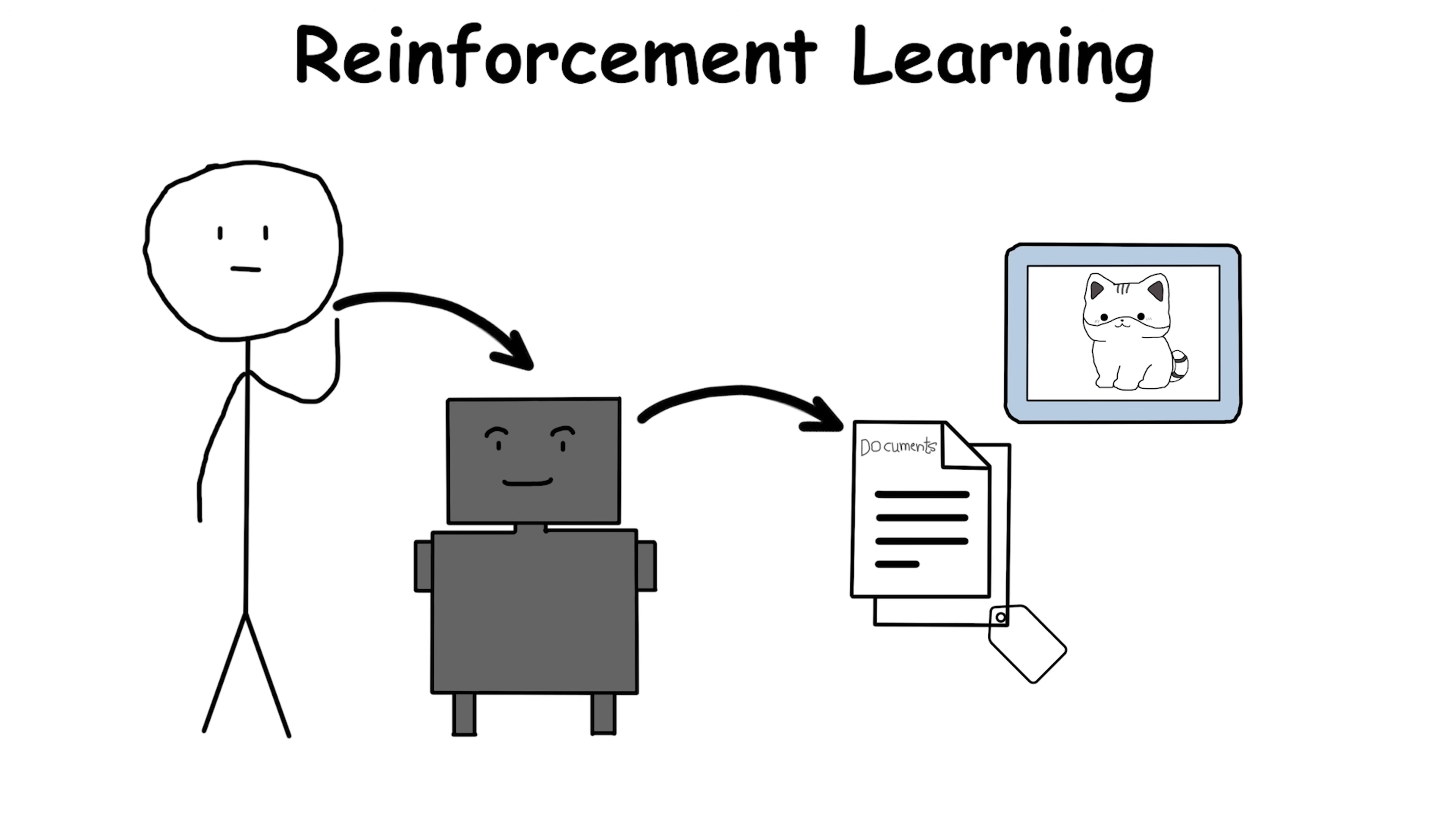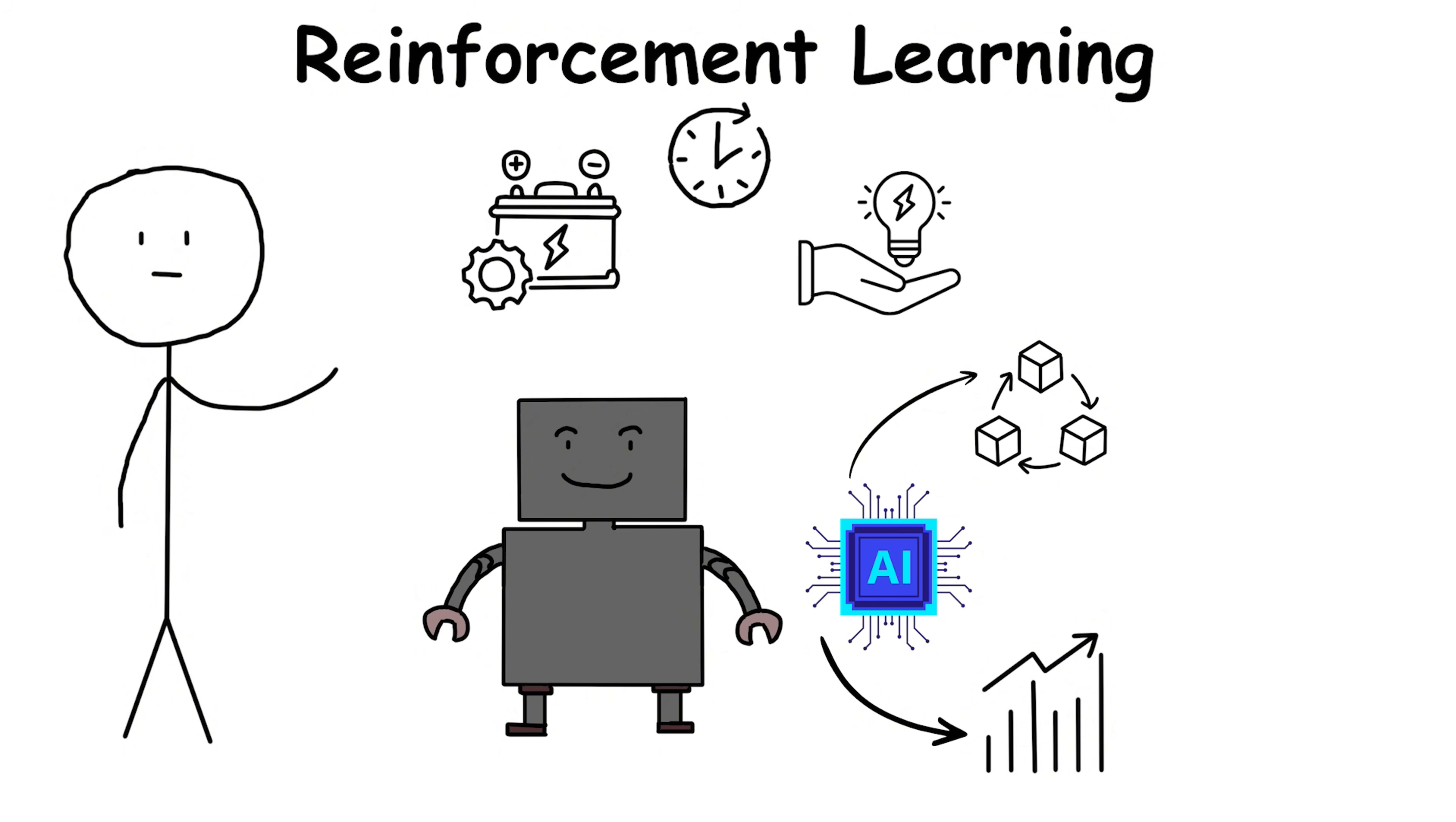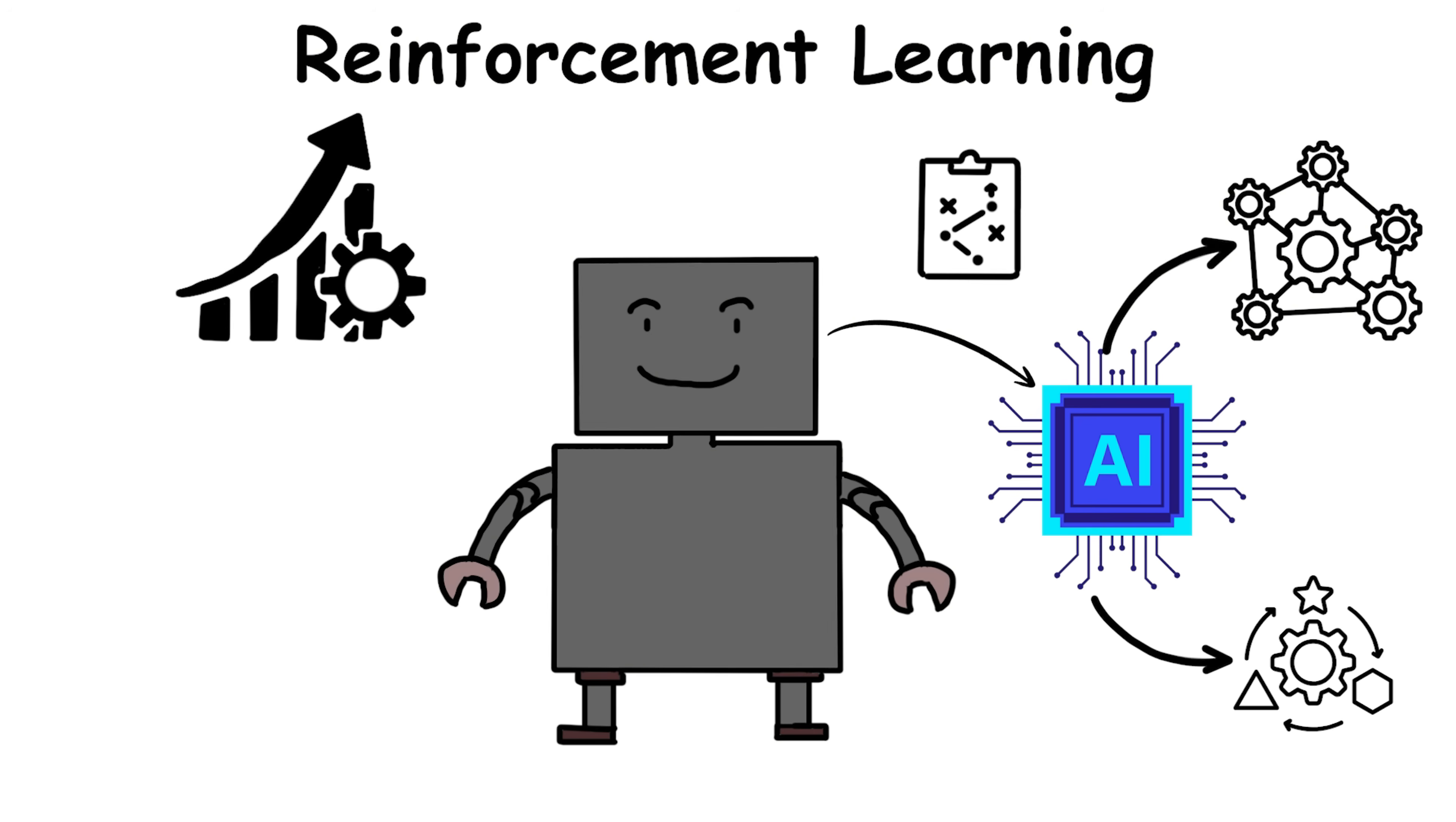Unlike machine learning that needs labeled data sets, reinforcement learning thrives in messy environments, using a reward system to figure out what works. It also powers energy management systems, where AI balances supply and demand in real time to save power while meeting human needs. Reinforcement learning equips AI to handle real-world complexity, teaching systems to adapt, strategize, and improve without explicit step-by-step instructions.